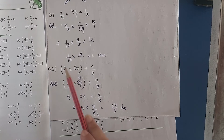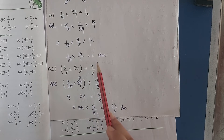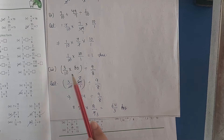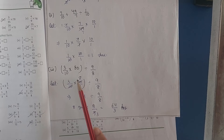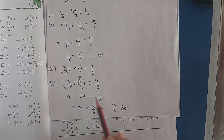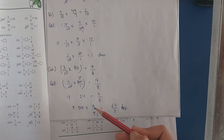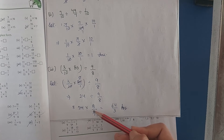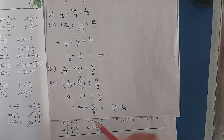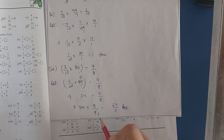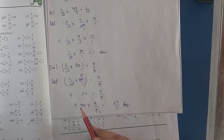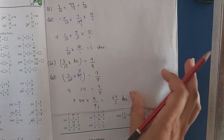Moving to our next question: 3/10 multiplied by 80, divided by 9/8. Firstly, solve the bracket: 10×1 is 10, 10×8 is 80. So that is 3×8, divided by 9/8, which is 24 divided by 9/8. Converting division into multiplication and taking the reciprocal of 9/8 — the reciprocal will be 8/9. So 9 and 24 share a common factor: 3 goes into 9 and 3 goes into 24. 8×8 is 64, divided by 3, so that will be our answer.